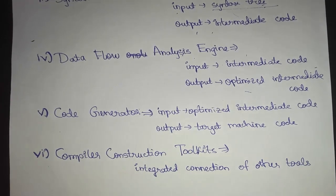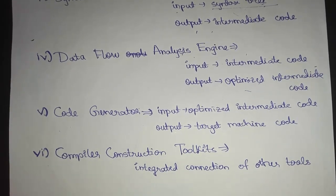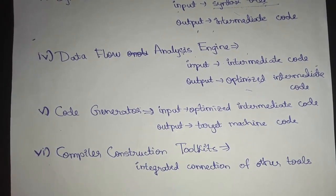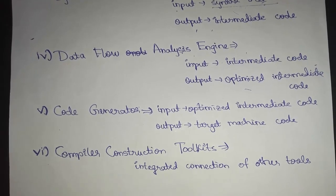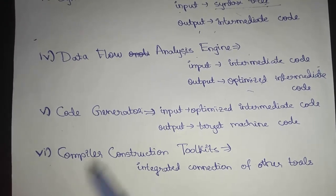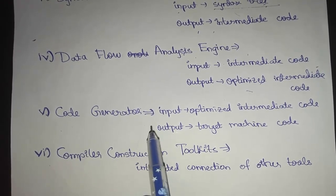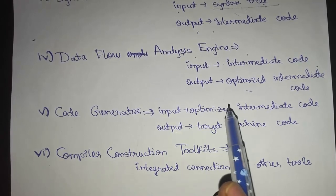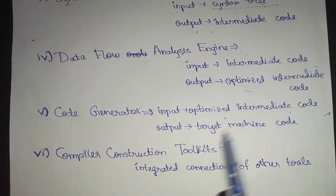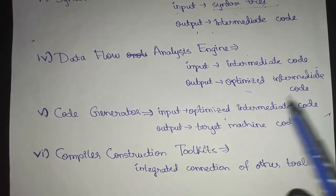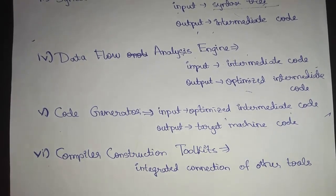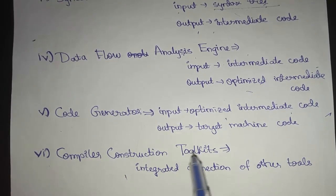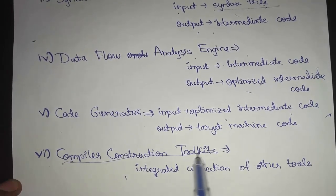The code generator is the tool used to provide the code generator phase of a compiler. In this phase, the input is the optimized intermediate code and the output is the target machine code.